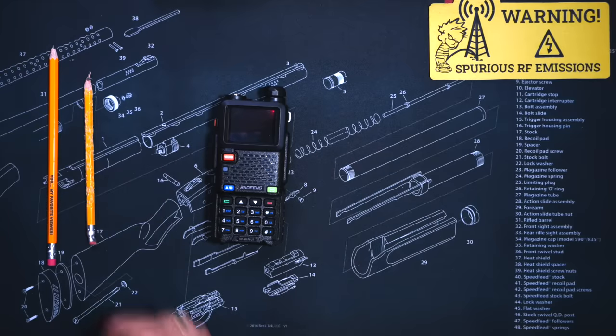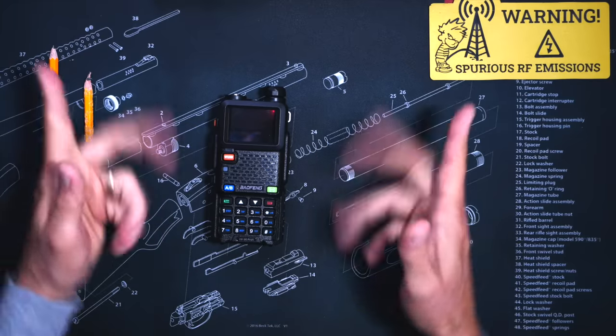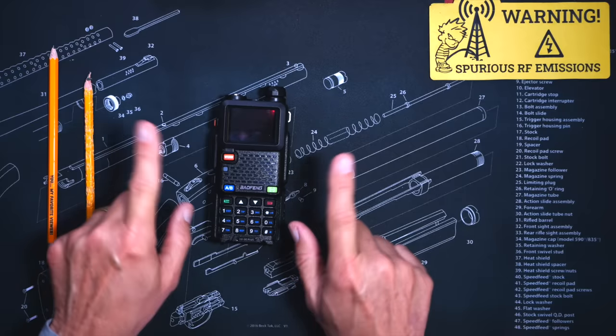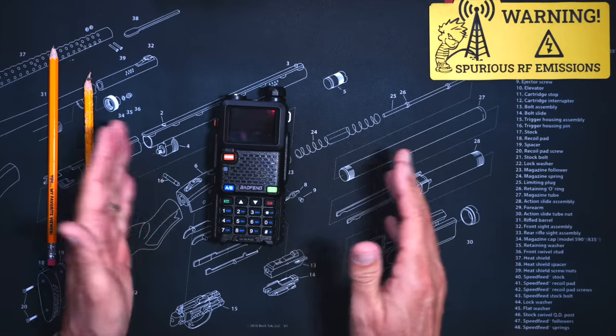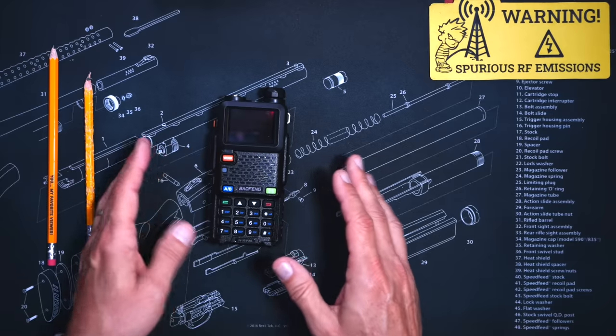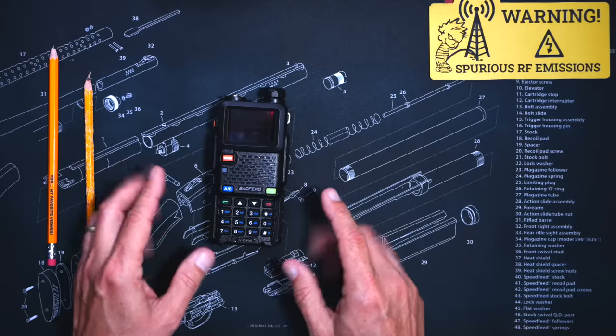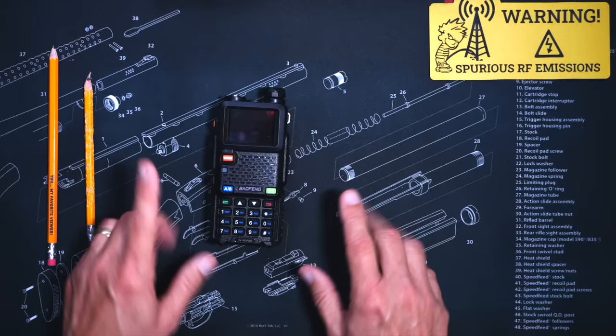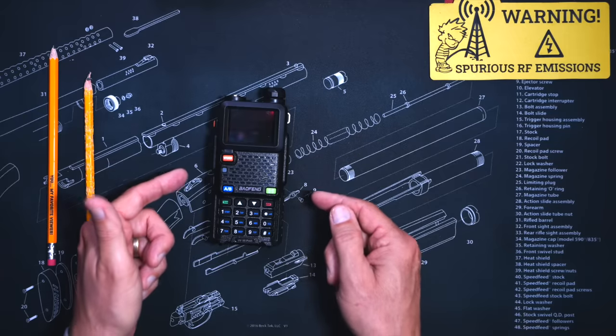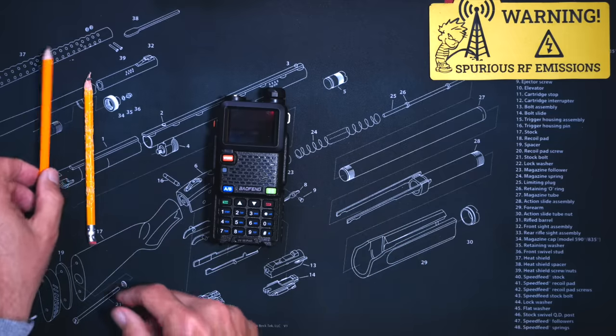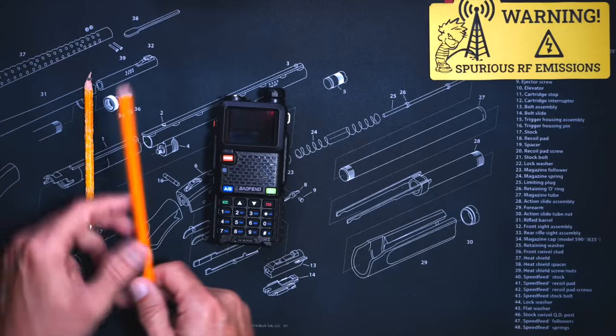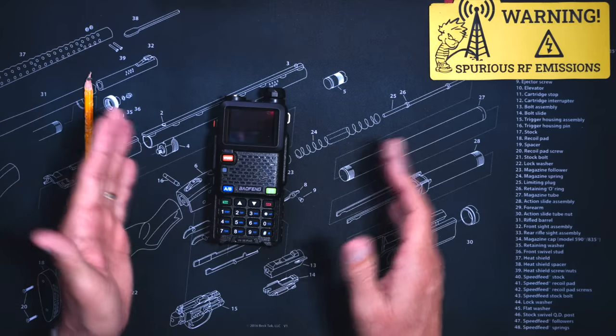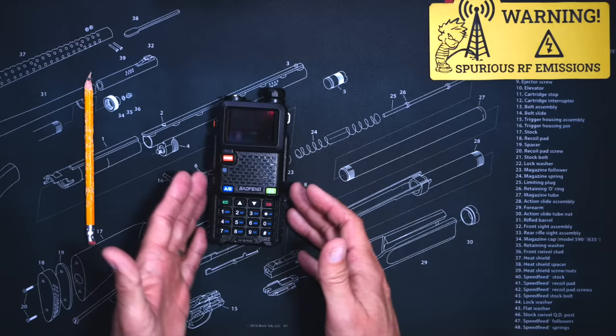Allow me to begin at the start. The Baofeng UV5G Plus is a GMRS radio. This means that our overlords at the FCC want you to purchase a permission slip, often referred to as a GMRS license, before you can transmit from this radio. However, no permission slip is required to purchase, own, possess, or just listen to this radio.